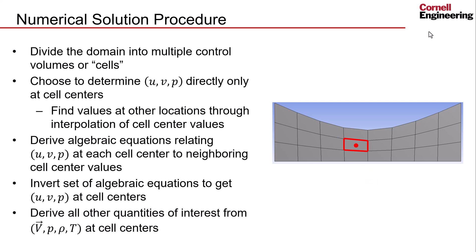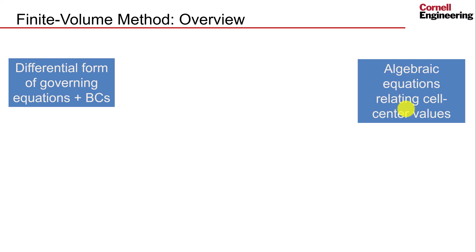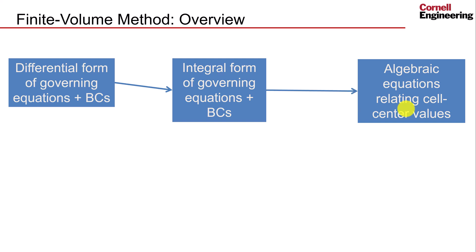Importantly, the solver only directly determines values of our primary unknowns. All other quantities and visualizations are post-processed from these values. To develop and solve these equations, Fluent uses the finite volume method. It starts with the mathematical model, which we know is the differential form of our governing equations and associated boundary conditions. It needs to develop algebraic equations relating cell center values of the primary unknowns.